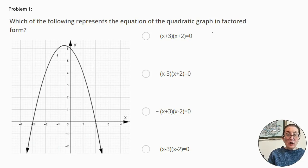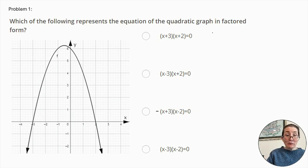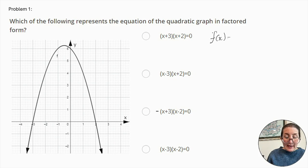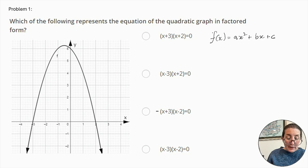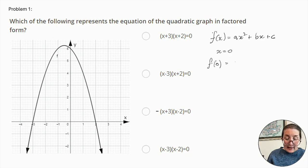Problem number one. Which of the following represents the equation of the quadratic graph in factored form? A parabolic equation takes the form of f(x) = ax² + bx + c. When graphing this equation, the y-axis crossing can be determined by making x = 0, i.e., f(0) = a(0)² + b(0) + c.